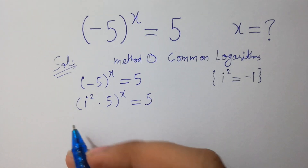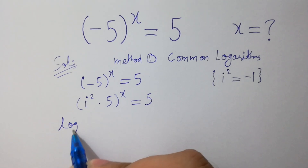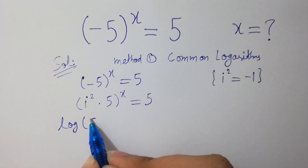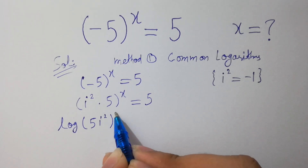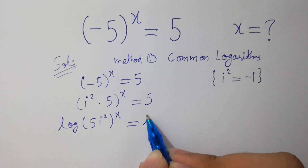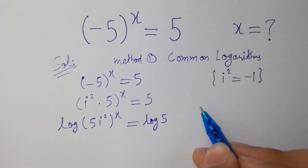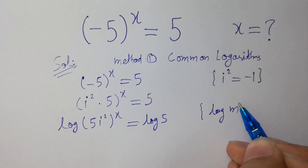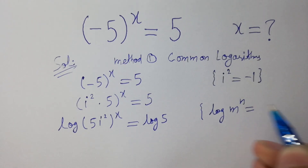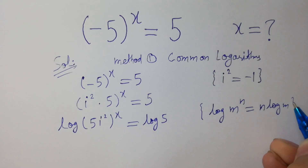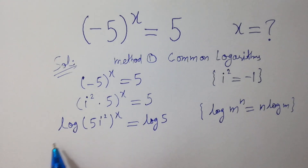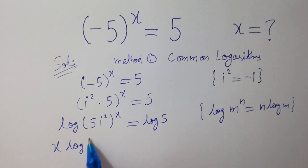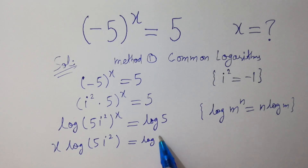Now take log on both sides. It can also be written as log of i squared times 5 to the whole power x equals log 5. Since log m to the power n equals n log m, it will be equal to x log of i squared times 5 equals log 5.